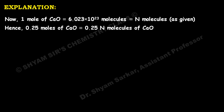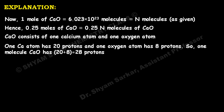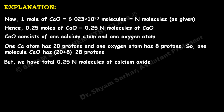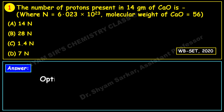Calcium oxide consists of one calcium atom and one oxygen atom. One calcium atom has 20 protons and one oxygen atom has 8 protons, so one molecule of CaO has 20 + 8 = 28 protons. We have 0.25N molecules, so total protons = 28 × 0.25N = 7N protons. Matching with the four options, this corresponds to option D — the correct answer is 7N.